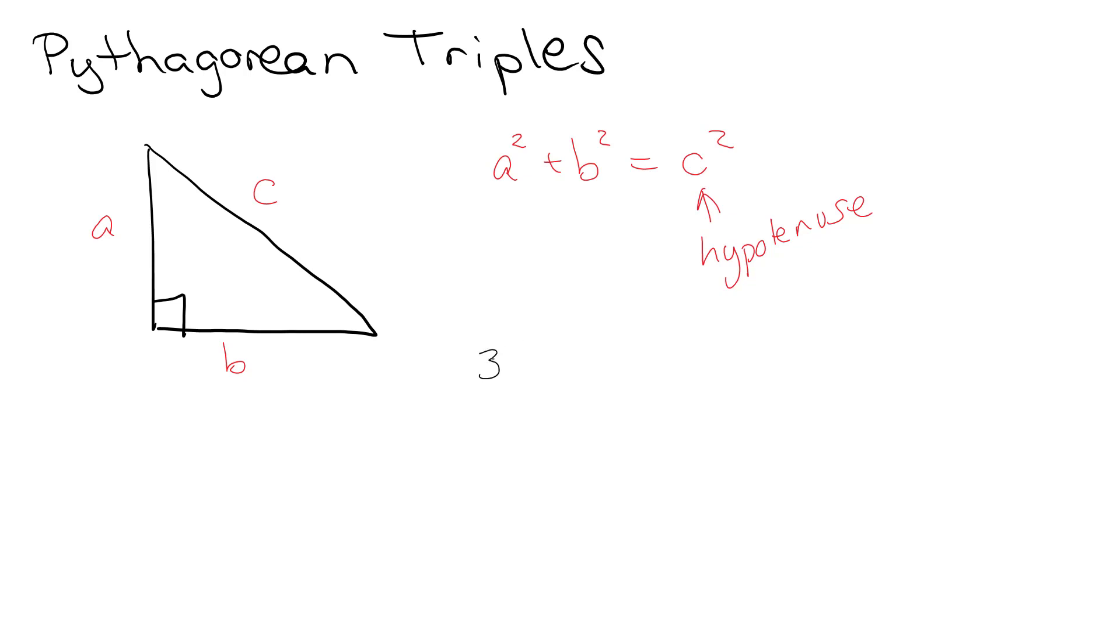For example, three squared plus four squared, well that would be nine plus 16 which is 25, which is the same thing as five squared. So a Pythagorean triple would be 3, 4, and 5.